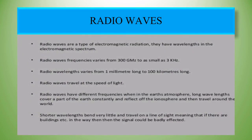Radio waves are a type of electromagnetic radiation. They have wavelengths in the electromagnetic spectrum. Radio wave frequency varies from 300 gigahertz to as small as 3 kilohertz. Radio wavelengths vary from 1 millimeter to 100 kilometers long. Radio waves travel at the speed of light.